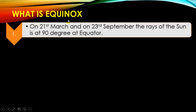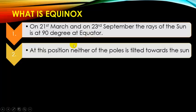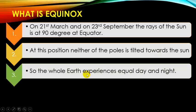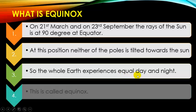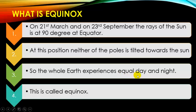What is Equinox? On 21st March and 23rd September, the rays of the sun are at 90 degrees at the equator. At this position, neither of the poles is tilted towards the sun, so the whole earth experiences equal day and night. This is called Equinox.